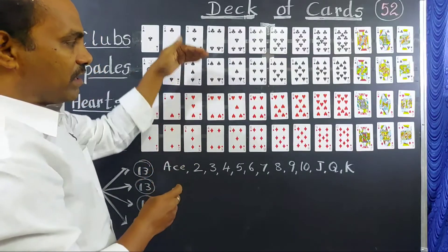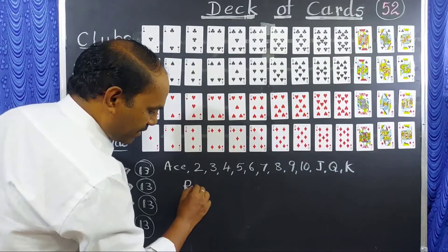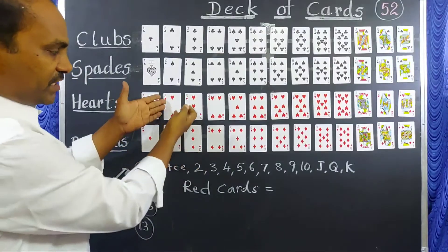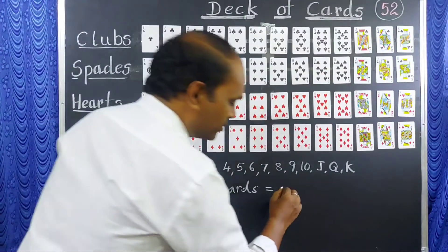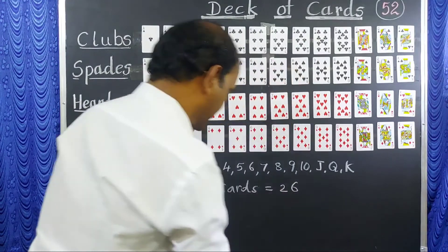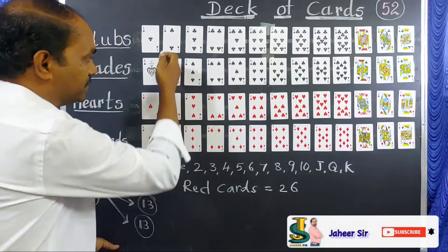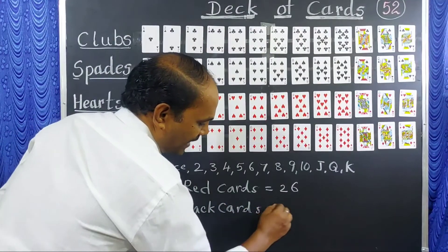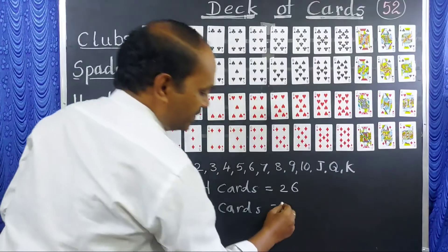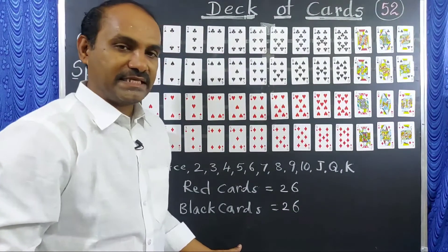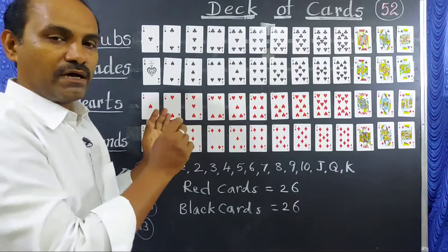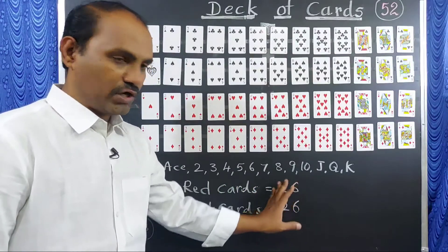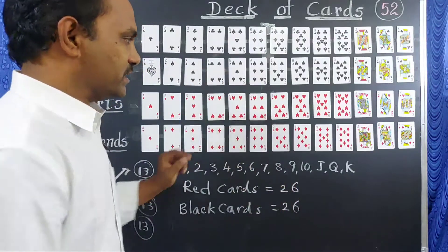So how many red cards are there? Red cards — half of them — 13 plus 13 is 26. There are 26 red cards. Similarly, black cards are also 13 plus 13, which is 26. So there are 26 black cards and 26 red cards, overall 52 cards.